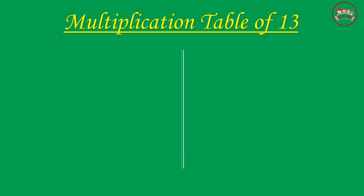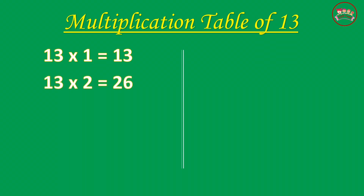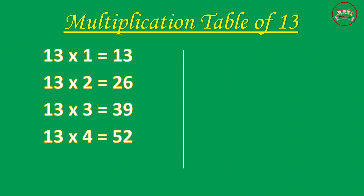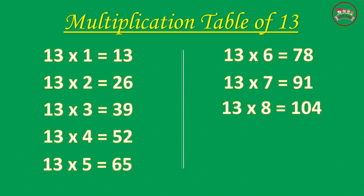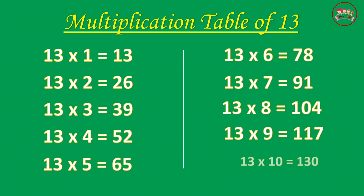Multiplication Table of 13. 13-1 is 13, 13-2 is 26, 13-3 is 39, 13-4 is 52, 13-5 is 65, 13-6 is 78, 13-7 is 91, 13-8 is 104, 13-9 is 117, 13-10 is 130.